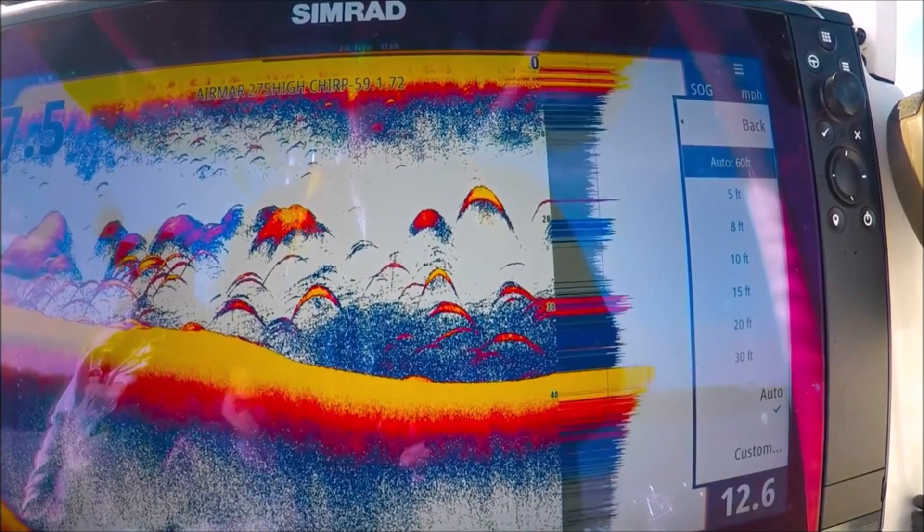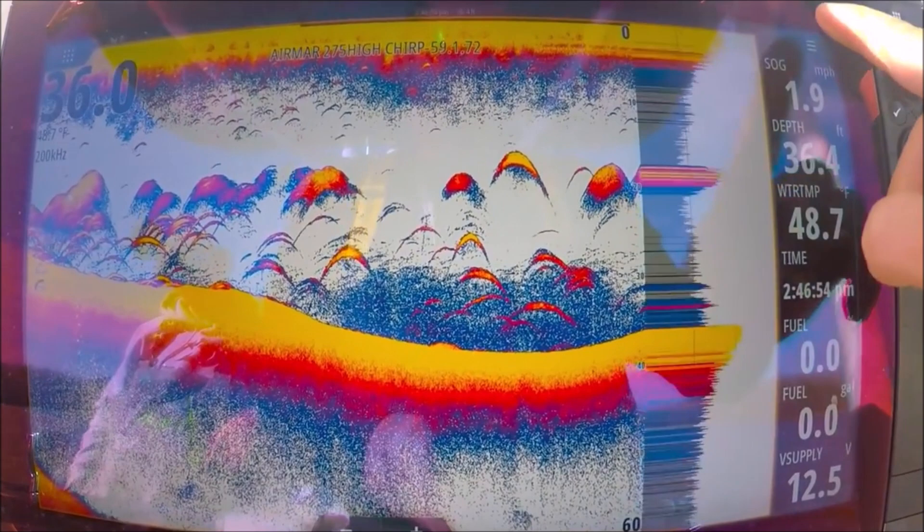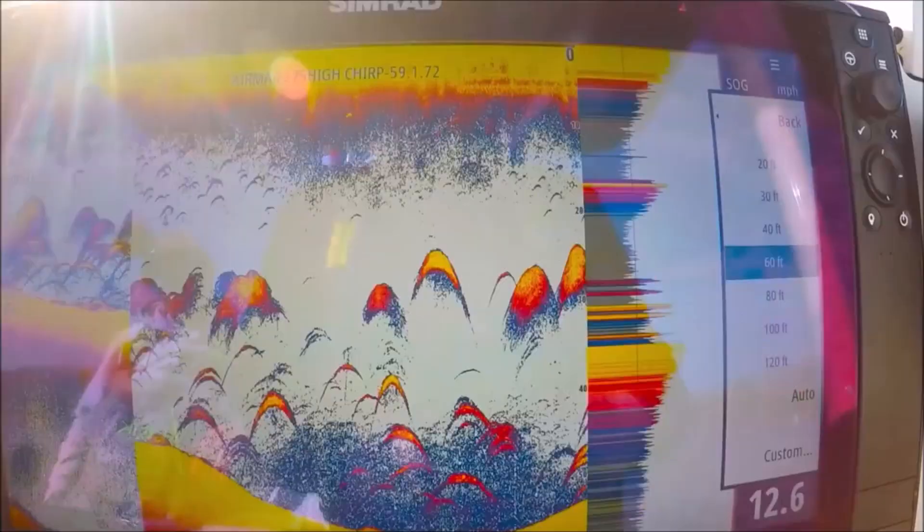Range auto as well. If you're fishing in, say, 37 feet of water like we are right now and you're staying in 37 feet all day long, set it to a manual range. For instance, 40 feet looks good, but we're not using all the screen.